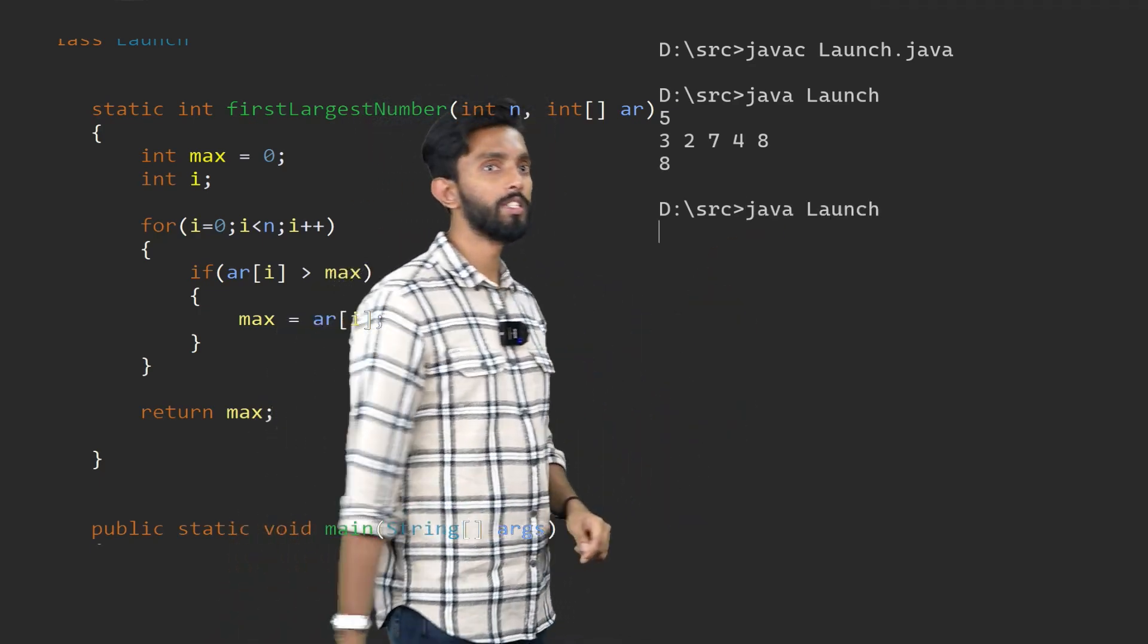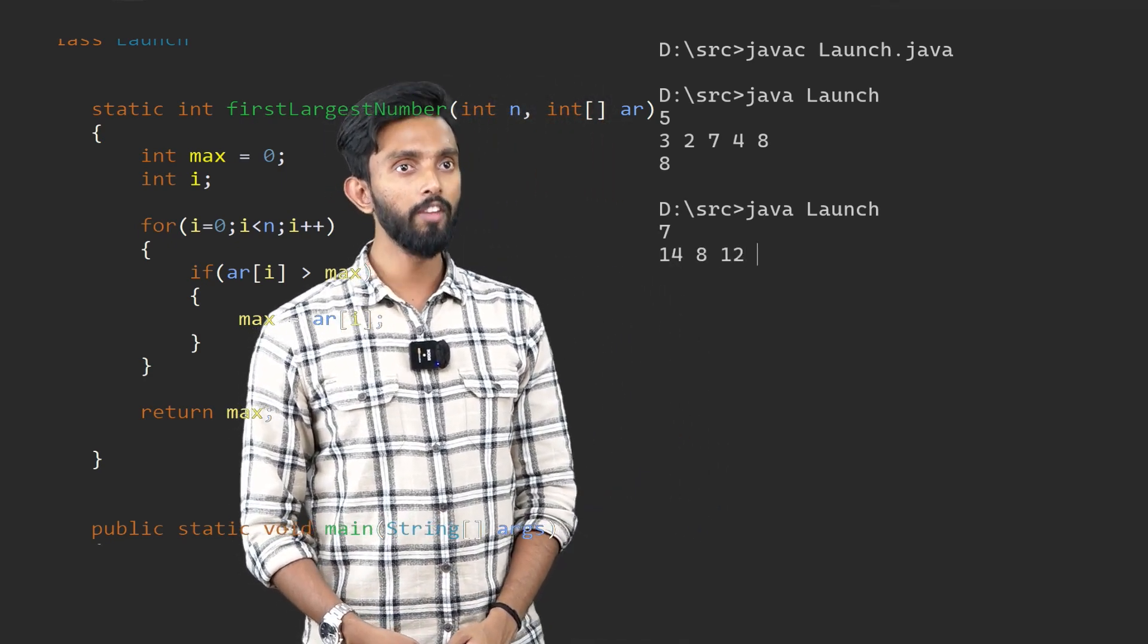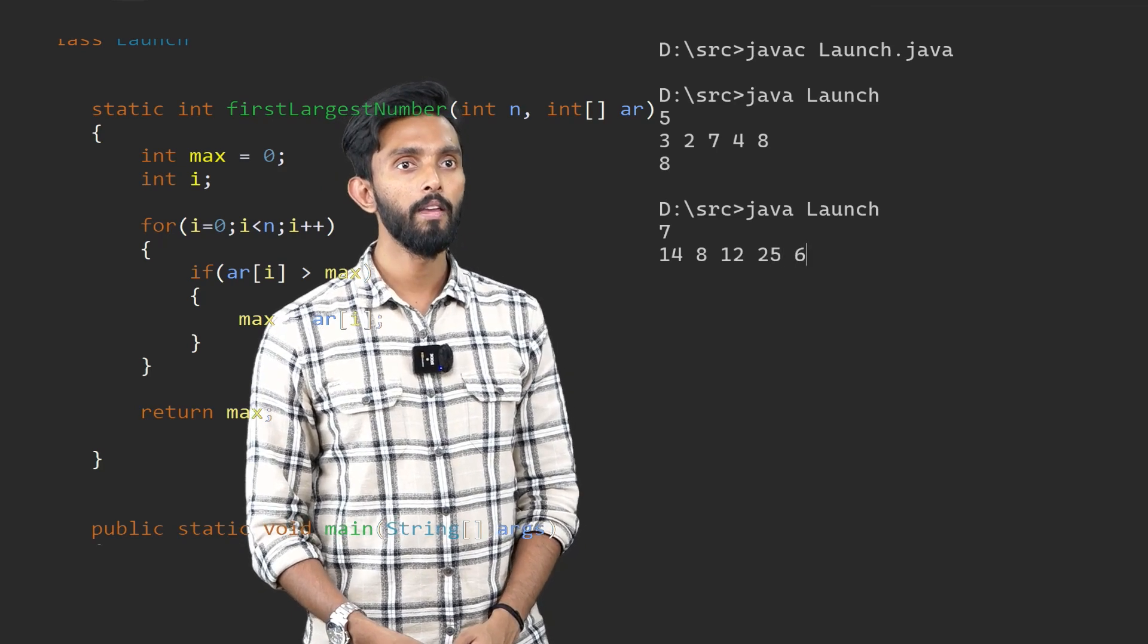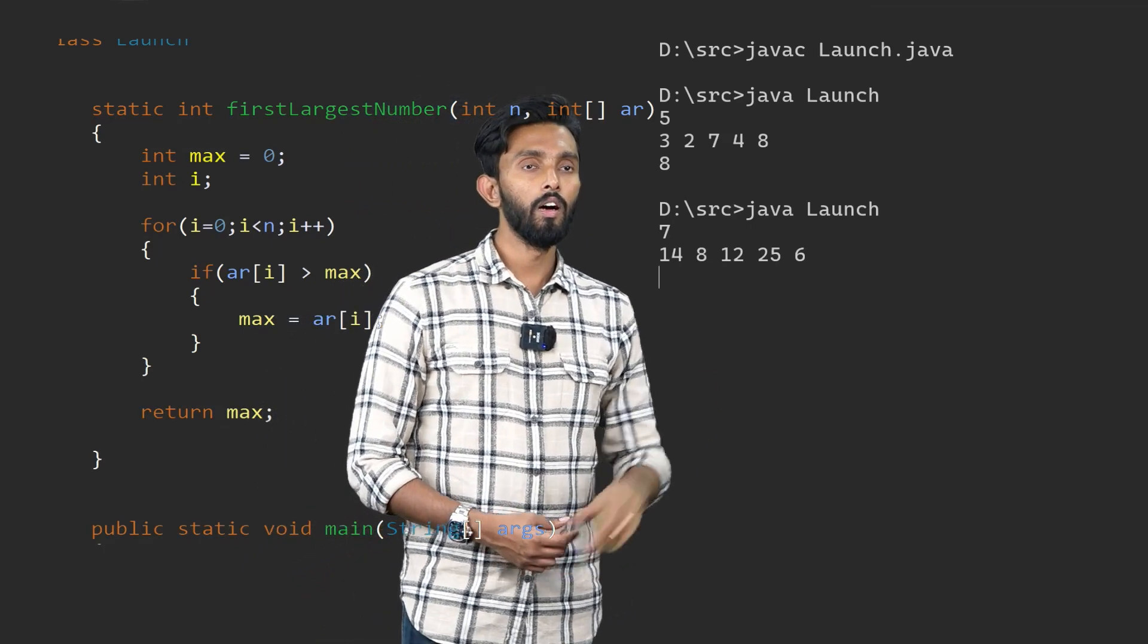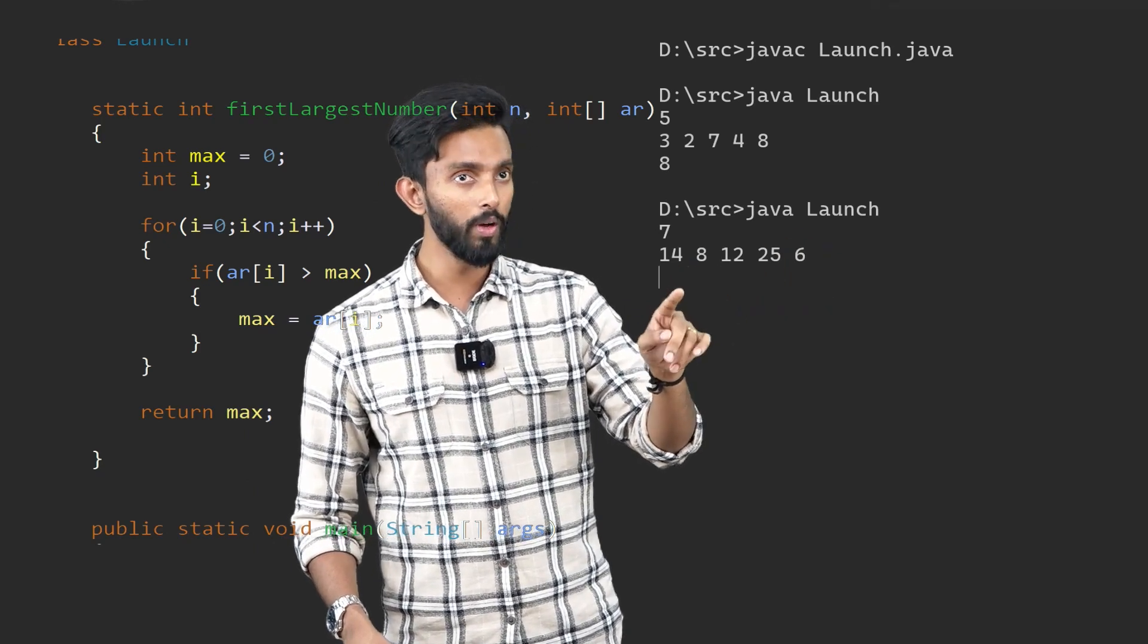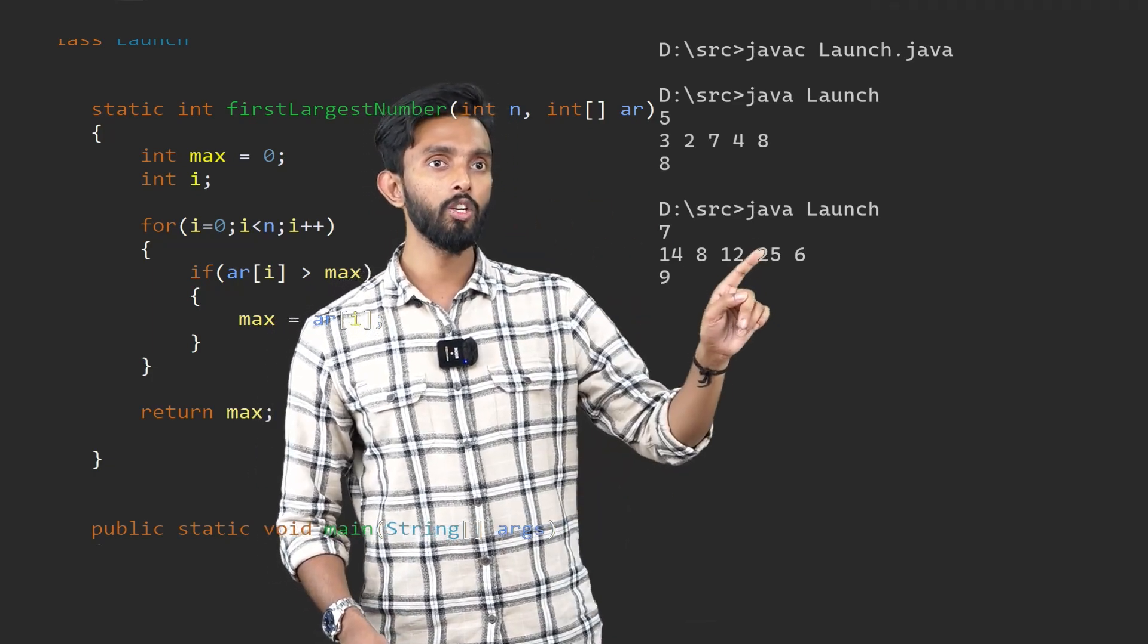Again execute. Let us assume n value is 7. I will give 14, 8, 12, 25, 6. Which is the highest value? 25. Press enter. 25. Sorry. One more value we should be giving. I can leave space also and give. I can press enter also and give. Both will work. Let us give one more. Maybe 9. Now which is the highest? 25.